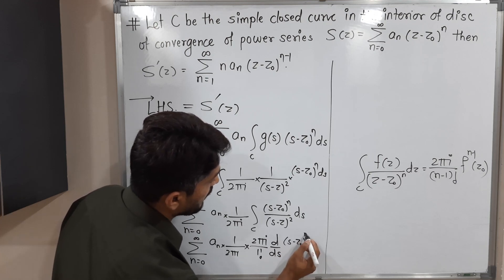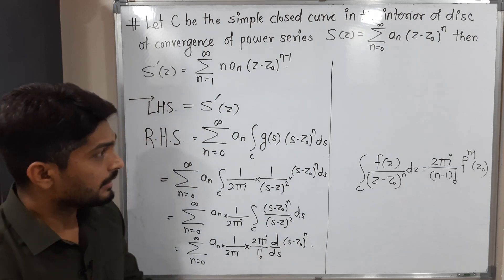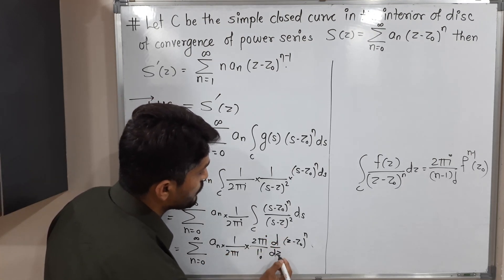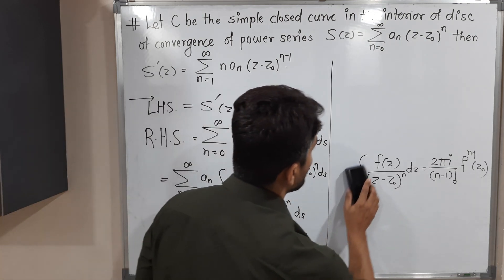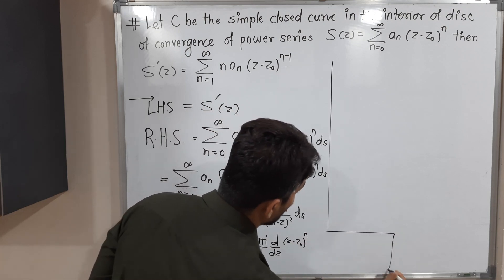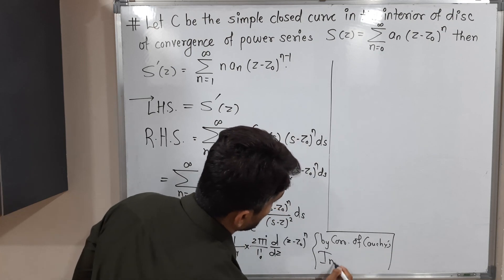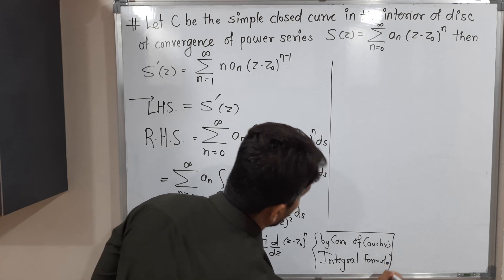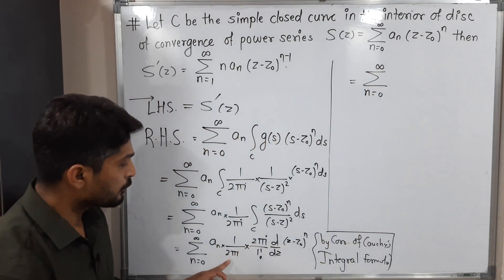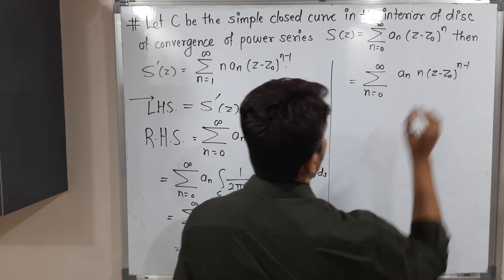Taking the first derivative of (s − z₀)ⁿ with respect to z and evaluating at z: the derivative is n·(z − z₀)ⁿ⁻¹. The 1/(2πi) and 2πi cancel, giving summation of aₙ · n · (z − z₀)ⁿ⁻¹. When n = 0 this term vanishes, so we can start the summation from n = 1 to infinity.